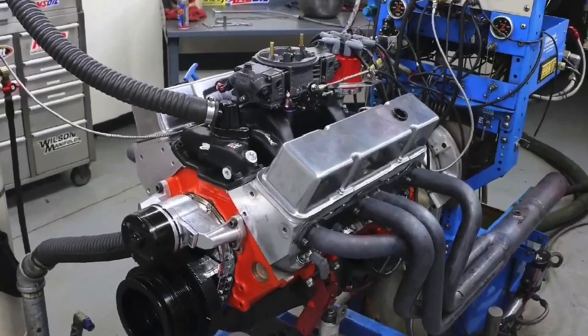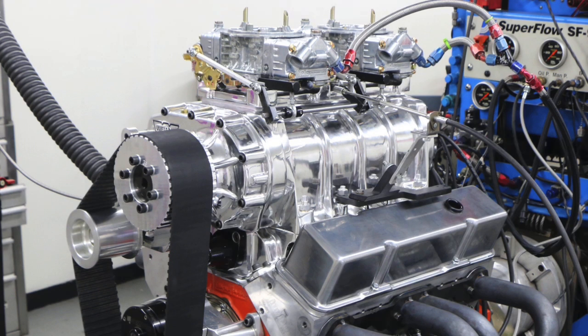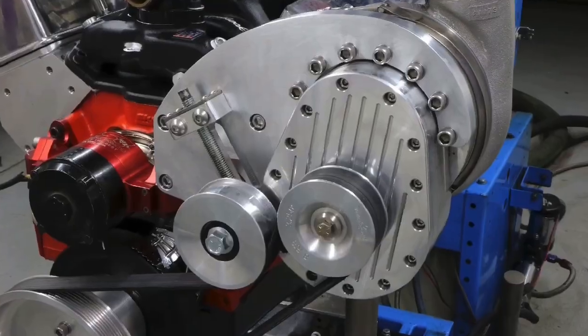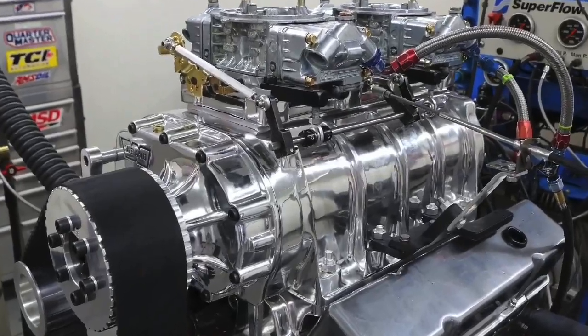Hey guys, Richard Holder here and welcome to the channel. Got a question for you: 383 small block Chevy Power Adder crate motor, centrifugal blower, roots blower - which one makes more torque, which one makes more power? The answers might surprise you. In this video we're going to compare a Torque Storm centrifugal supercharger to a 671 roots supercharger.